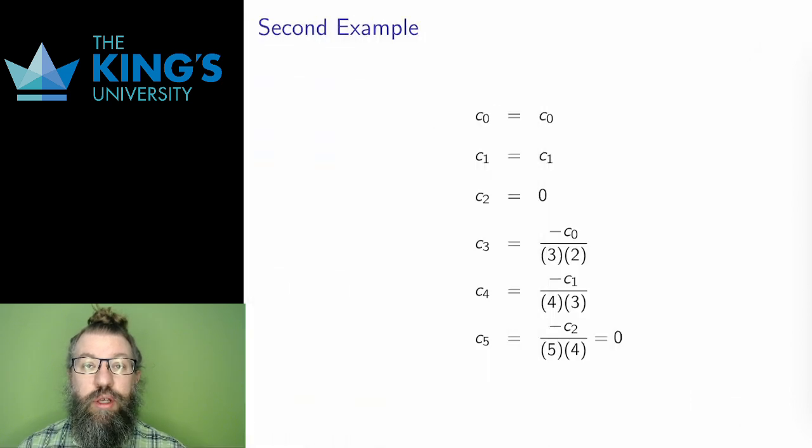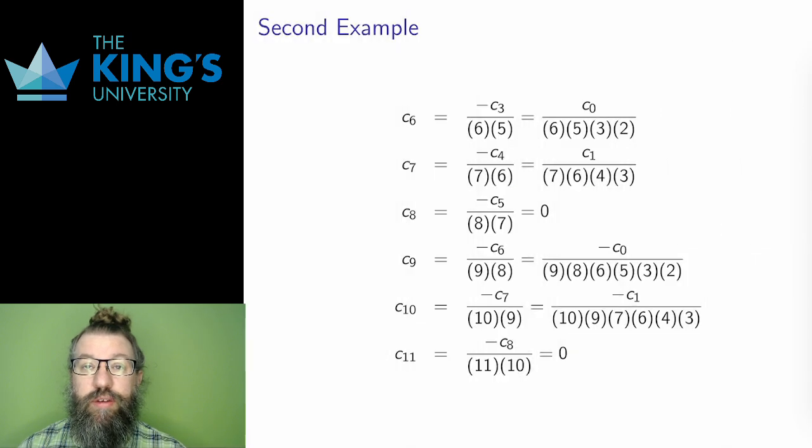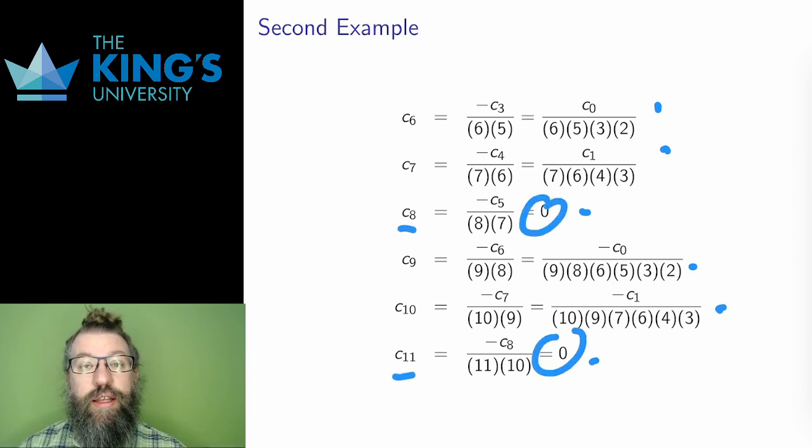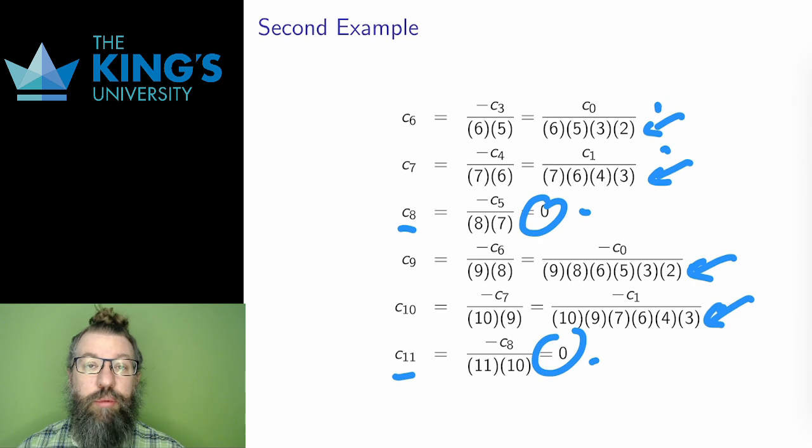I'll start by calculating terms. C0 and C1 are unknowns from the initial condition, which I'll leave as unknowns in this one, and C2 is 0. Then C3 is negative C0 over 3 times 2, C4 is negative C1 over 4 times 3, and C5 is negative C2 over 5 times 4, which is 0, since C2 is 0. And again, I will be leaving C1 and C0 as unknowns all the way through. I keep calculating coefficients. Here are the next six calculations applying the recurrence relation. Every third term is 0, 2, 5, 8, 11. The others have alternating signs with factorial-like denominators, but they aren't complete factorials since they skip every third number in the multiplications.